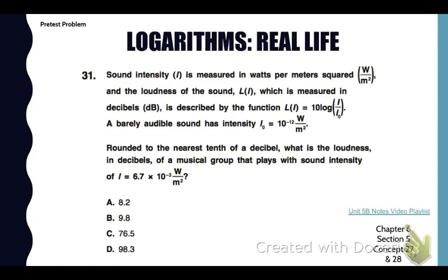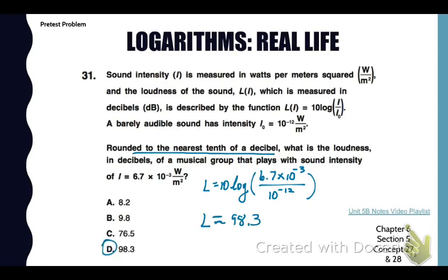So we need to find rounded to the nearest tenth of the decibel what is the loudness of a musical group that plays with that intensity. So I'm going to plug that number in. It's just in scientific notation, which is okay, for I and then 10 to the negative 12 for I sub zero. Then I'm just going to grab my calculator and you grab yours and just do a straight plug-in the way you see it. And you'll see that that will equal about 98.3 decibels.